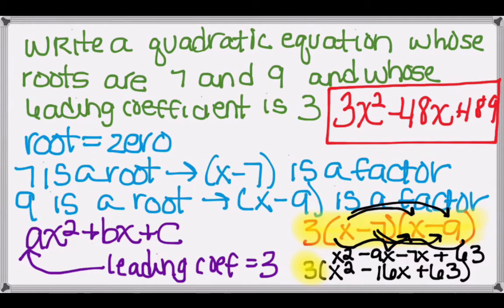So 3x² minus 48x plus 189. So we can see that the leading coefficient is 3, that is the value of a, and if we were to factor it, we'd end up with 3 times (x minus 7) times (x minus 9), which means it has the roots of 7 and 9.